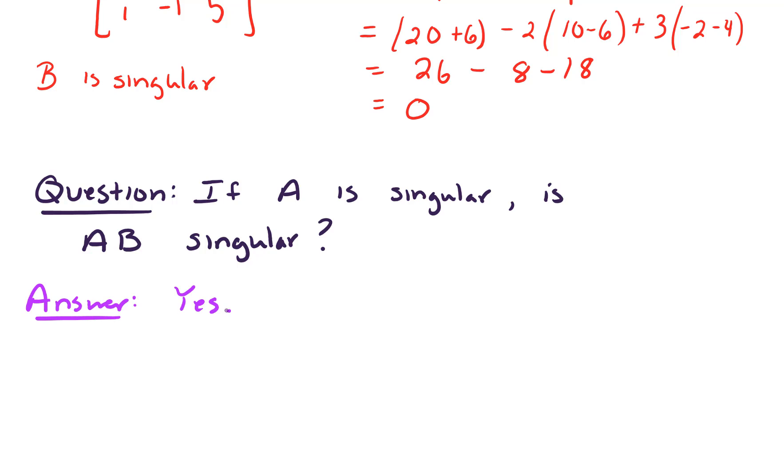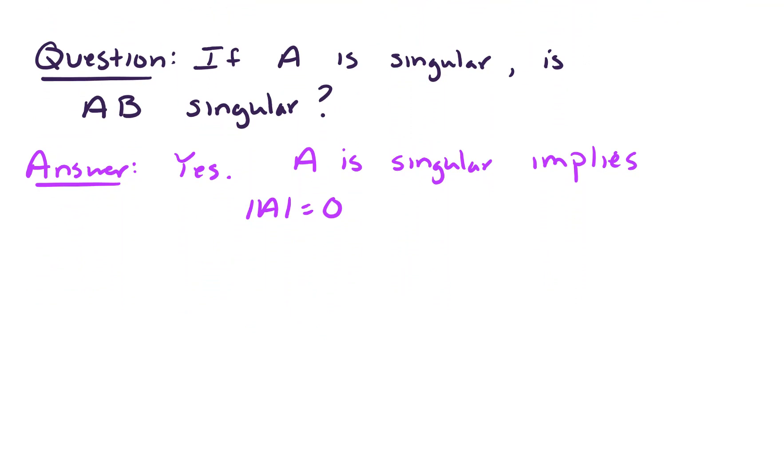Here's why. If A is singular, A is singular implies that the determinant of A is 0. That's just the definition of what it means to be singular. Now, let's look at the determinant of A times B. By properties of determinants, this is just the determinant of A times the determinant of B. And who knows what the determinant of B is? I don't even care. Because the determinant of A is 0, meaning that this whole product is going to be 0. Since the determinant of AB equals 0, this shows that AB is a singular matrix.